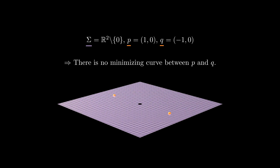We can observe this when we consider the surface consisting of the xy-plane minus the origin. In this surface, when we look at the curves connecting (1,0) and (-1,0), all of them have lengths strictly more than 2, as the only curve of length 2 connecting these two points is the straight line, which is not contained in our surface sigma. On the other hand, we can easily construct curves in sigma connecting p and q with length arbitrarily close to 2, meaning that the infimum is not attained.